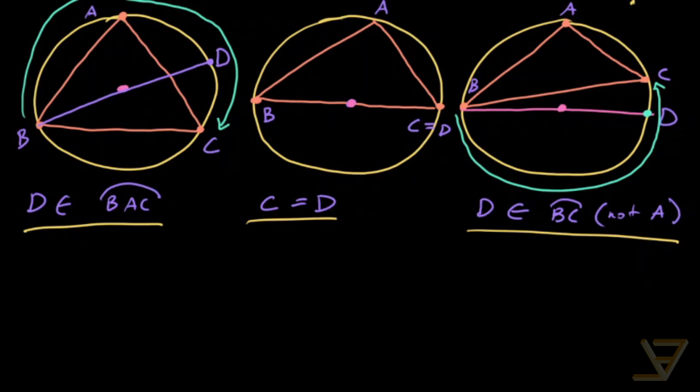In the first case, what we have is that we're going to draw DC. And by Thales theorem, this angle over here, angle BCD, is equal to 90 degrees or pi over 2 in radians. And what we get is that by the inscribed angle theorem, angle BAC is equal to angle BDC.